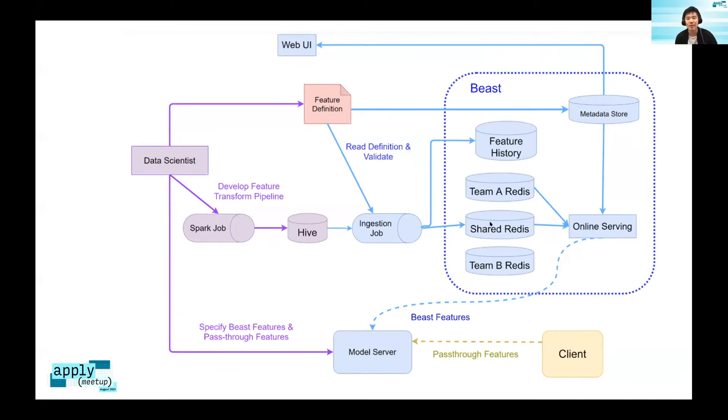Next, the data scientists would bring up the model server as before. The only change is they can specify an additional config file, and this config file will allow you to say which features you want to read from Beast - the name is Beast because it is our internal project name, built from Feast. So we allow you to specify what features you should read from Beast and then there's some pass-through features, basically something that's not available immediately in the feature store right now. We also have some front-end engineer that's building up the UI for easier registration and discovery.